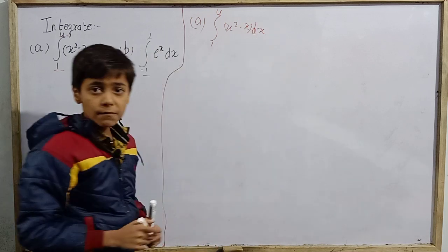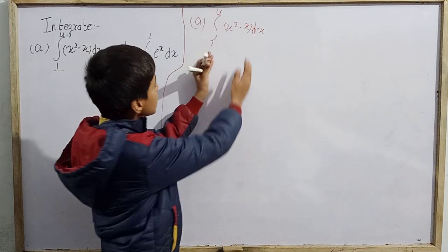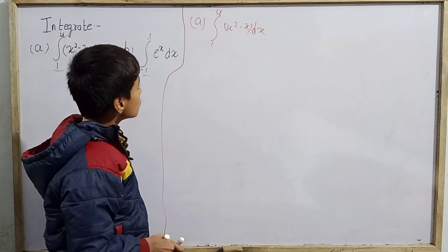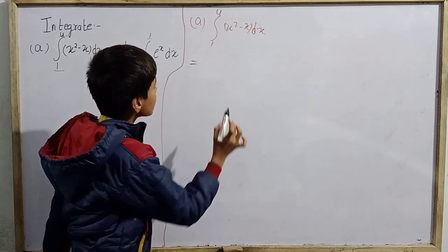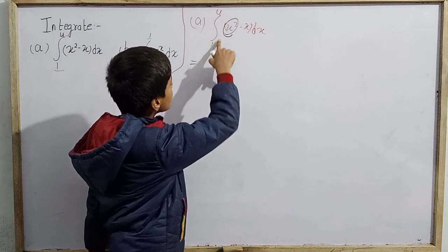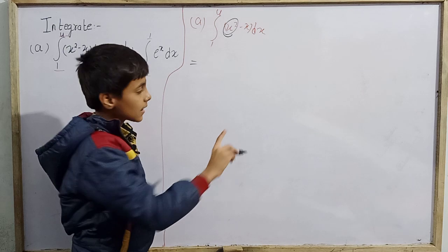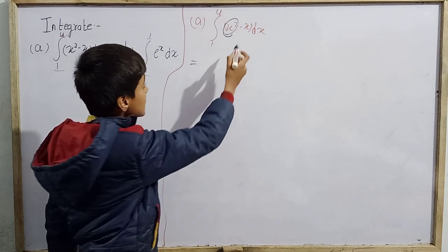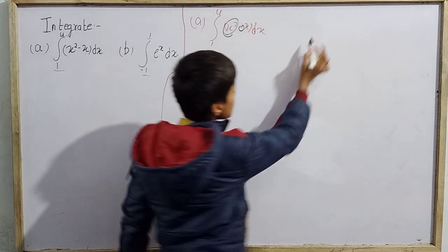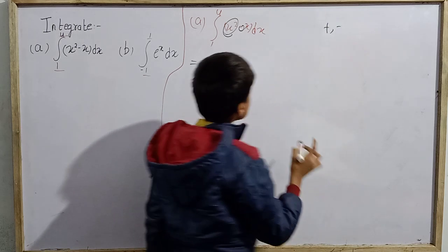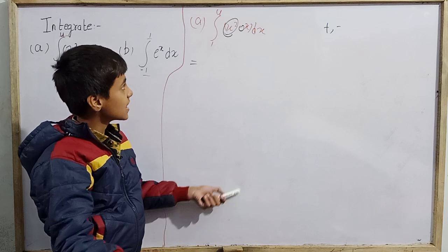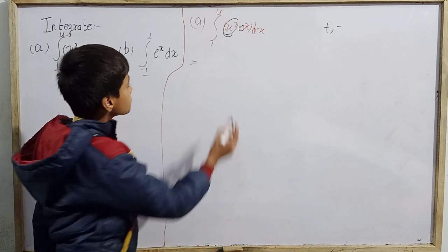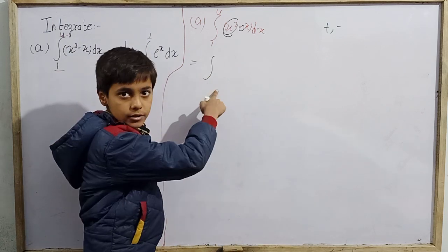We will integrate x² - x dx. Since there is a minus symbol, we can integrate each term separately — first integrating x² from 1 to 4, then integrating x from 1 to 4, and then subtracting. When there is plus or minus, we integrate terms separately and add or subtract.